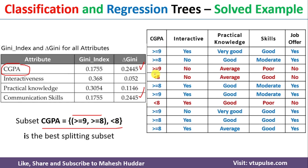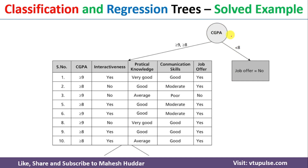Looking at the <8 branch: there are two examples for CGPA less than 8, and both are of the No type. So whenever CGPA < 8, the job offer will be No. For the remaining branch — {≥9, ≥8} — there is a mix of Yes and No examples, so we need to continue building the tree. From the remaining 8 examples, we start the next iteration.